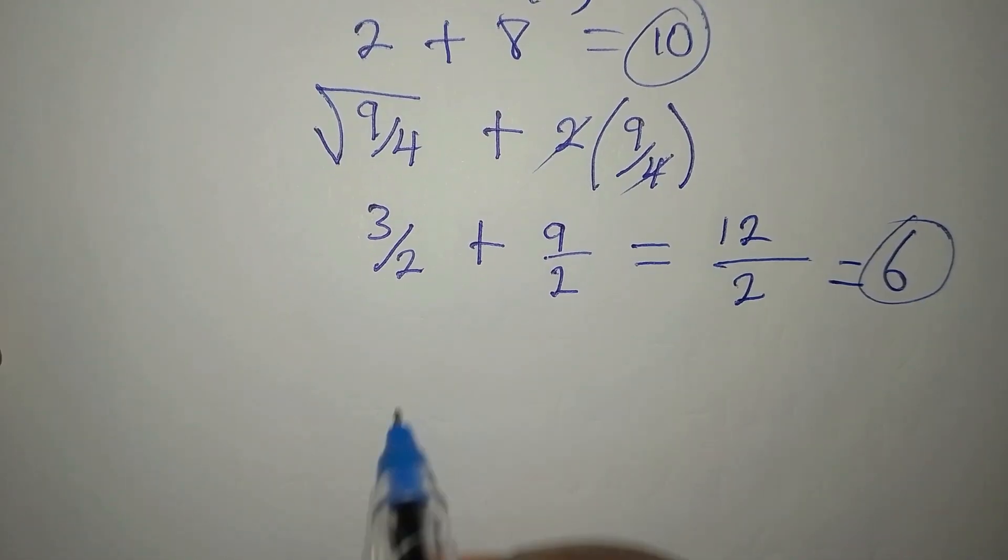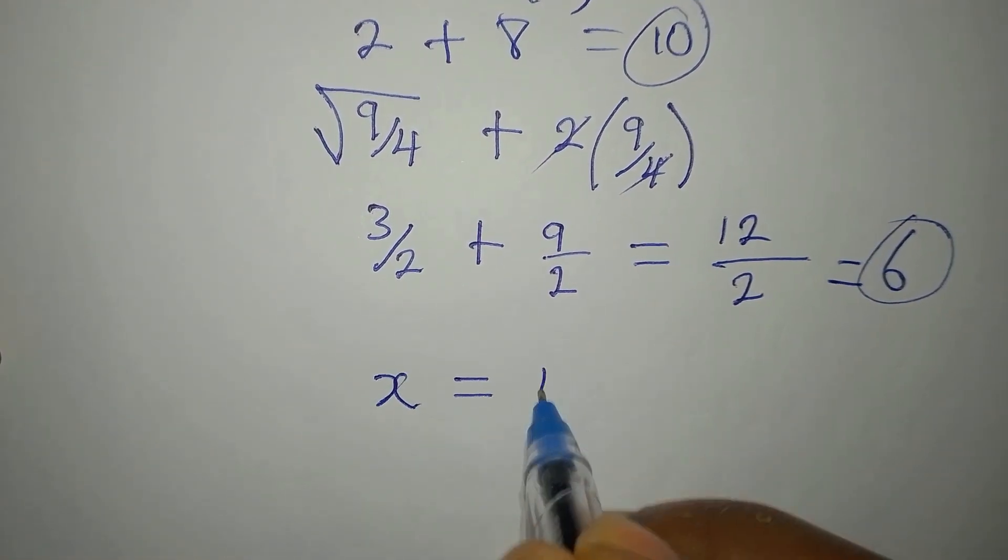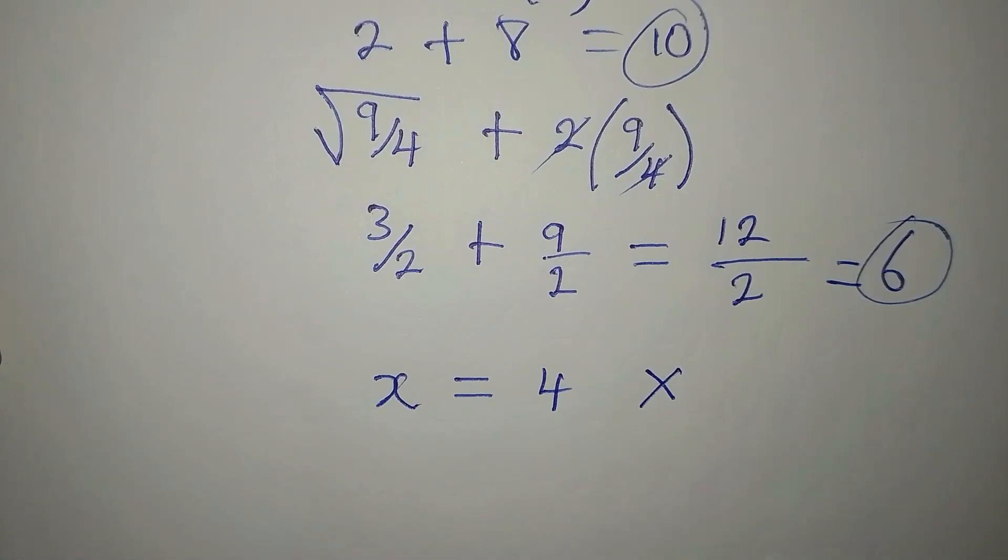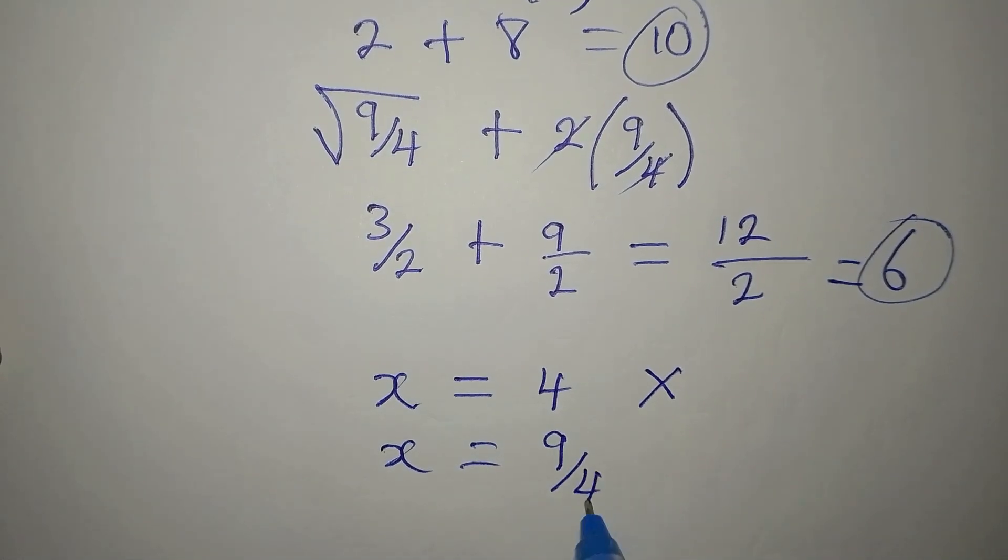So this is to say that our x equals 4 does not satisfy, and then x equals 9 over 4 satisfies.